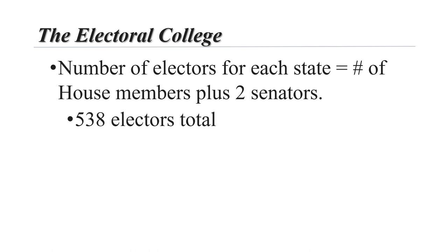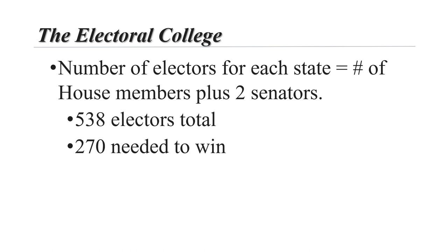Electoral votes are won on a state-by-state basis. There are 538 electors in all, and the winning candidate needs a majority — 270 votes — to become president. The president of the United States is the winner of the electoral college, but not necessarily the candidate with the most popular votes. This is in part because most elections in the United States are governed by plurality, winner-take-all rules.